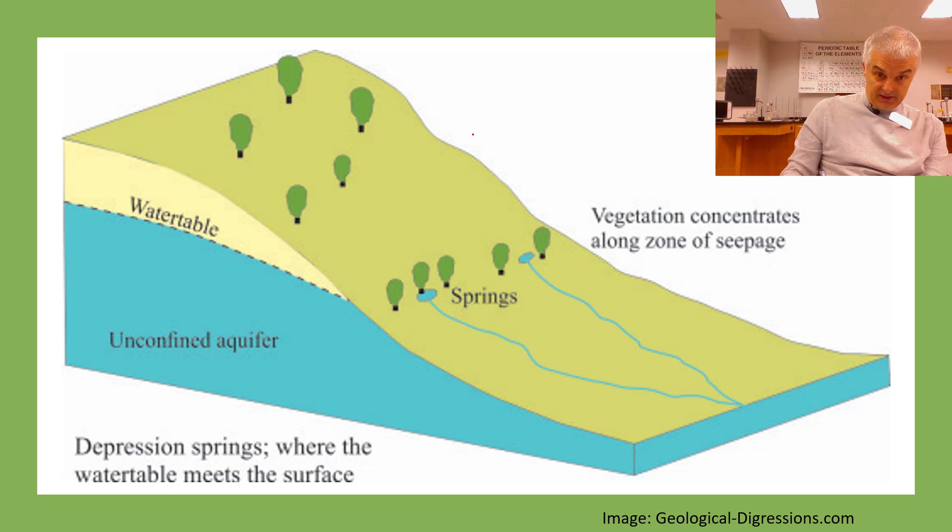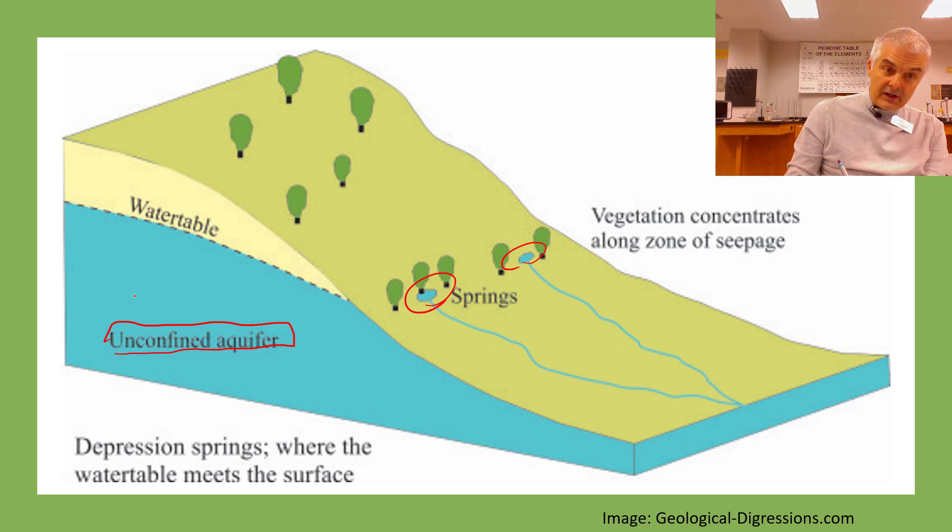So what the heck is a spring? It comes down with the groundwater. You've got an unconfined aquifer, here's the water table, and at some point it's just gonna shoot out. The pressure of all this water moving down in this direction pops out and then you get a spring. Does it make sense?